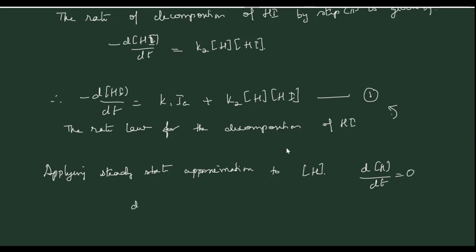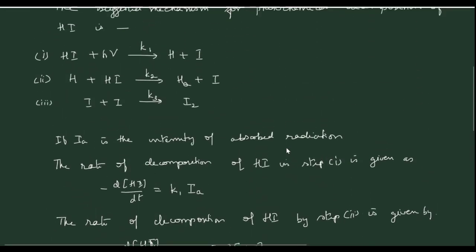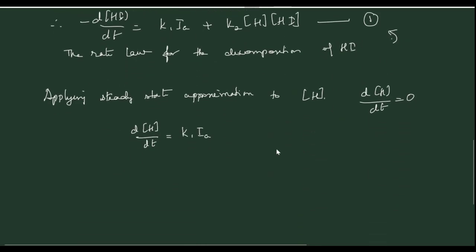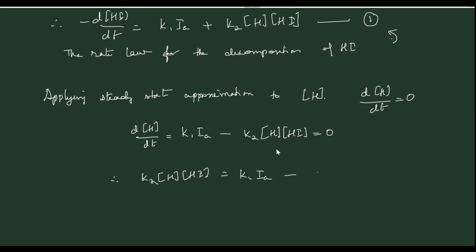The expression for d[H]/dt is as follows. H is formed in the first step, so its rate of formation is K1 × Ia. In the second step, H is consumed, so its rate of consumption is K2 × [H] × [HI]. Therefore, d[H]/dt = K1 × Ia − K2 × [H] × [HI] = 0 at steady state. Rearranging gives K2 × [H] × [HI] = K1 × Ia, which is equation 2.